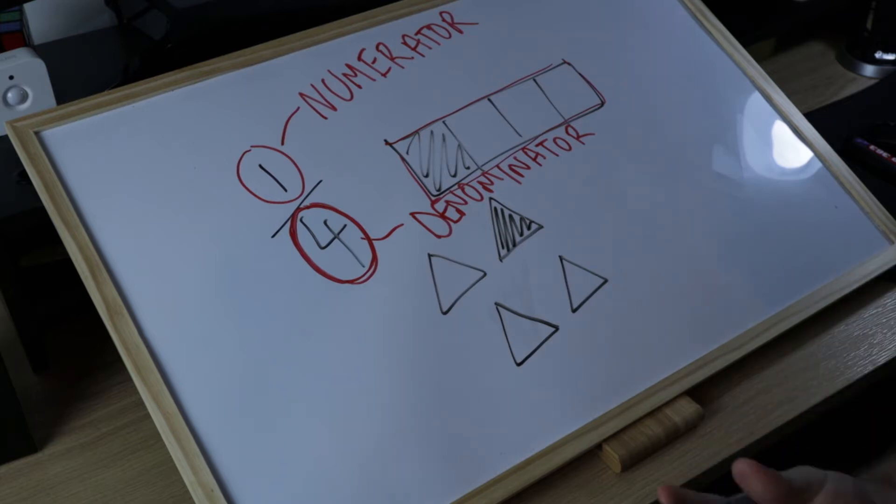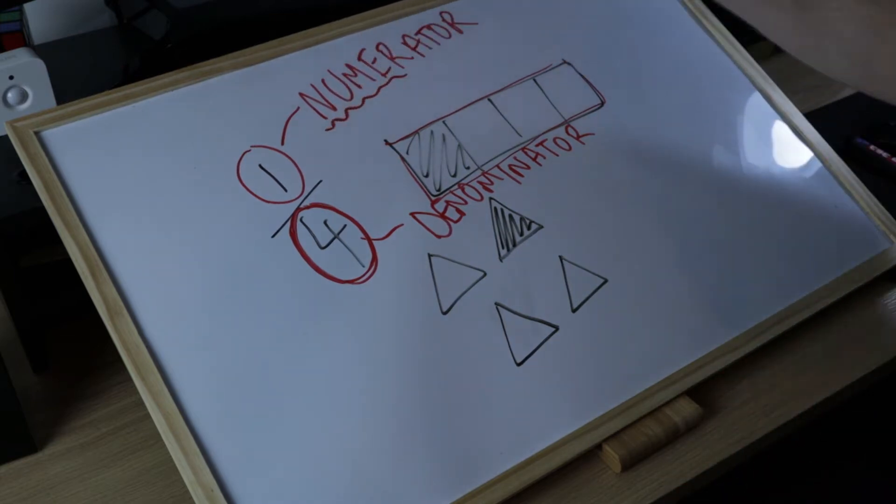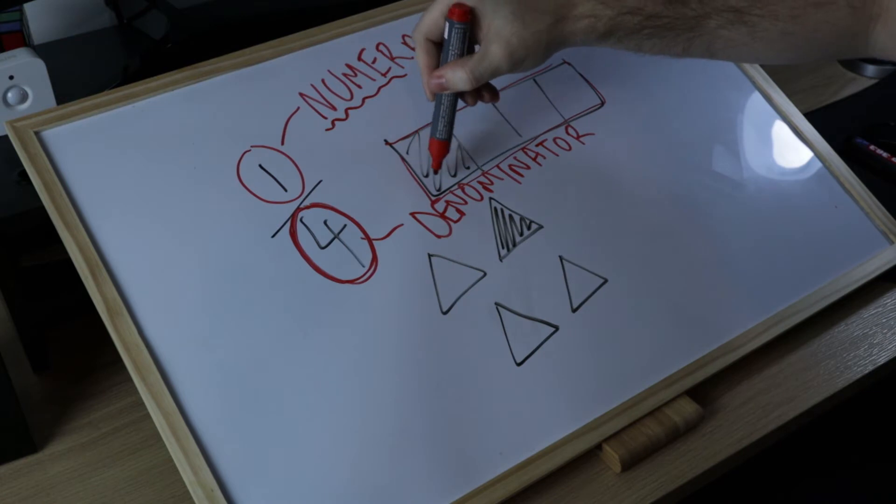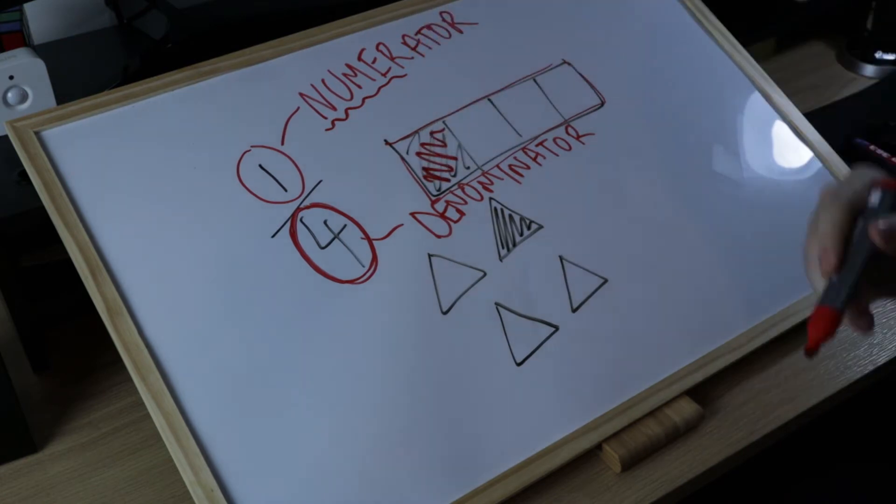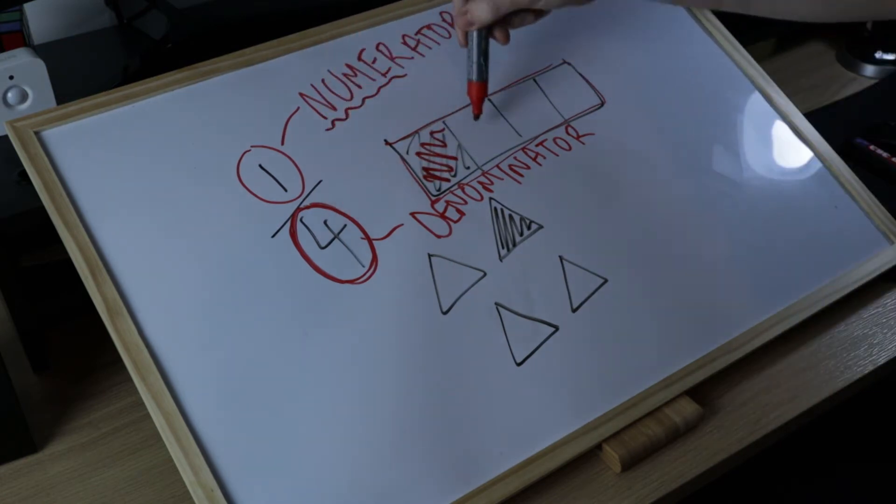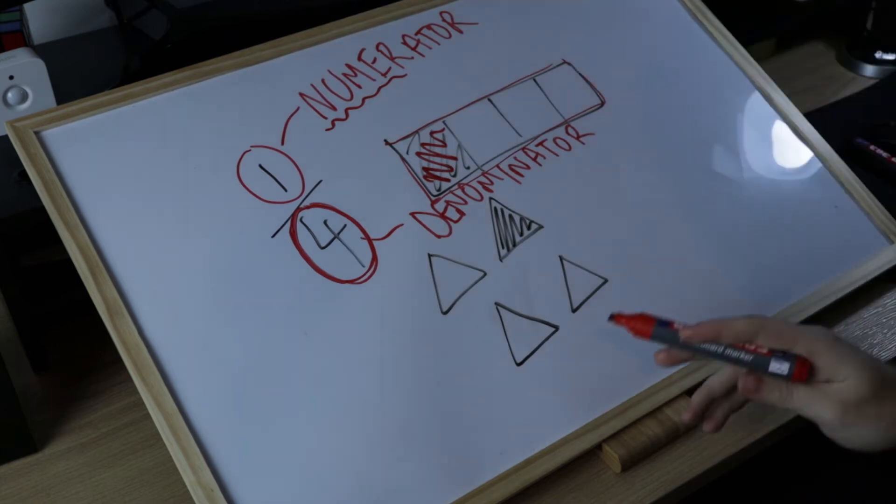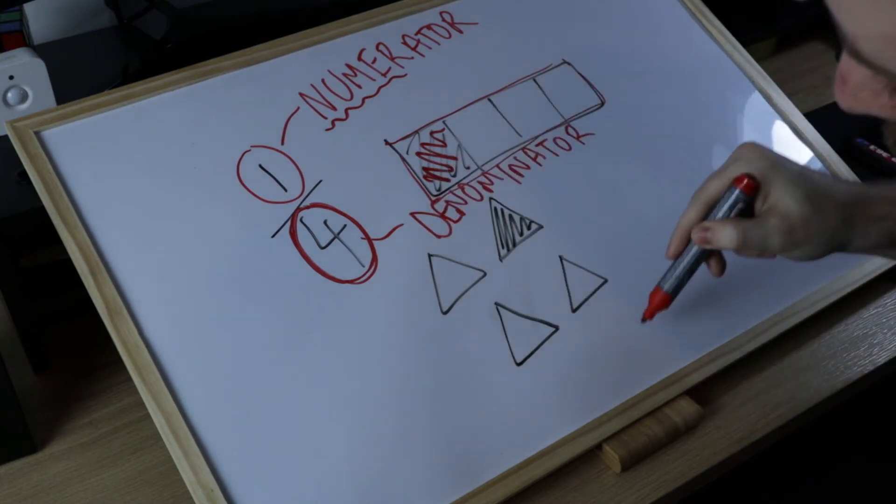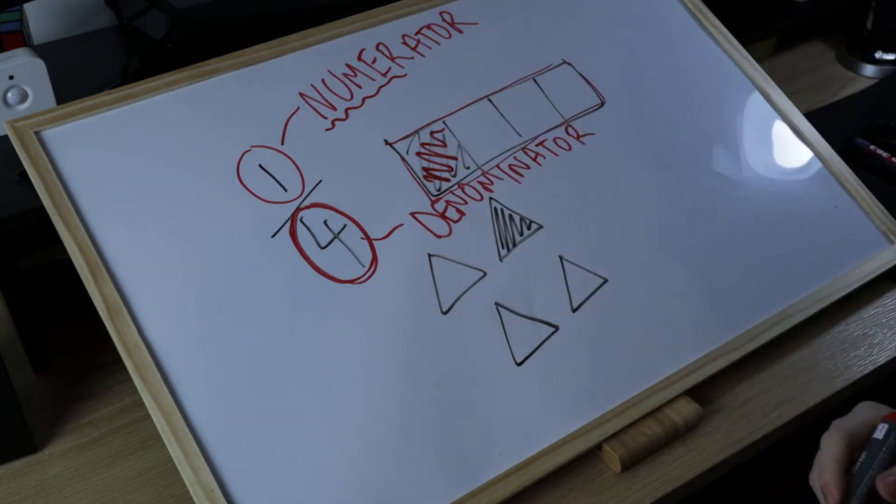Then what does the numerator tell us? The numerator simply tells us the number of those equal parts we need to represent. As you can see here, one part is shaded out of four equal parts in the whole. Same below, in this set one of the pieces are shaded out of the whole four equal pieces.